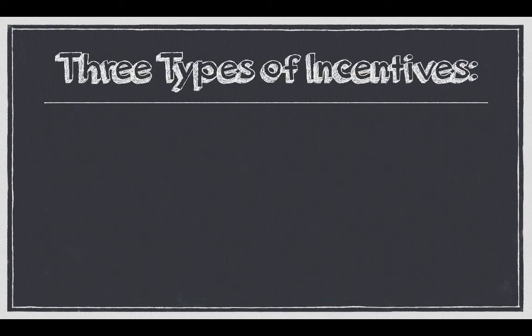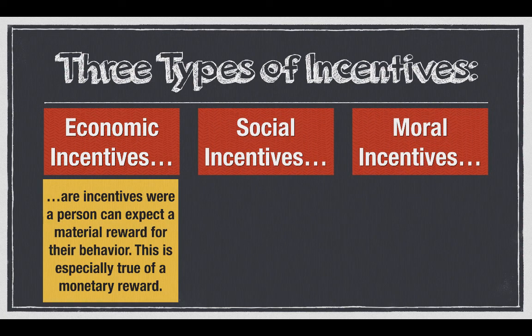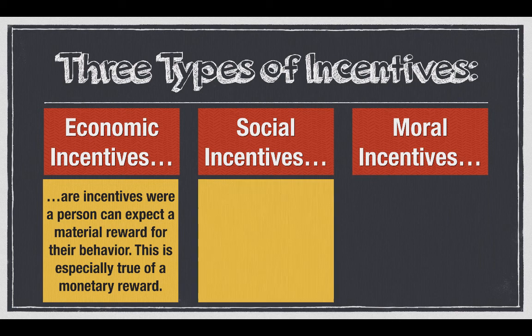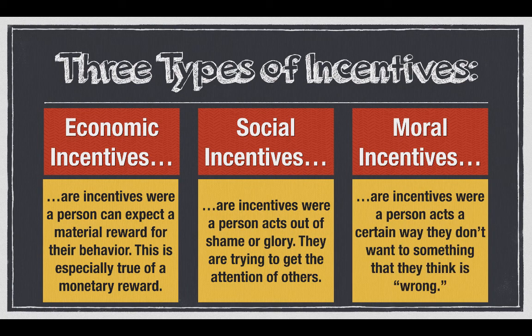Within incentives, there are three other types: economic incentives, social incentives, and moral incentives. Economic incentives are where a person can expect a material reward for their behavior — i.e., money. Social incentives are where people act out of shame or glory, trying to get the attention of others to seem important. Moral incentives are all in your own head — you act a certain way because you don't want to see yourself as wrong.